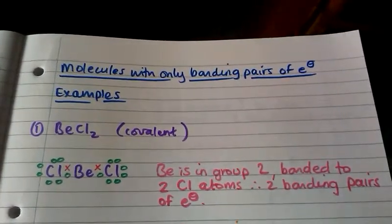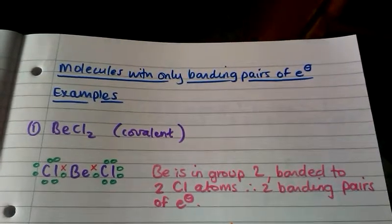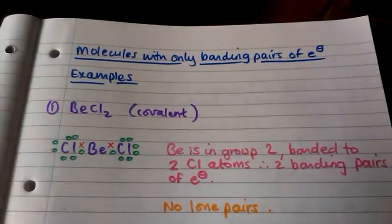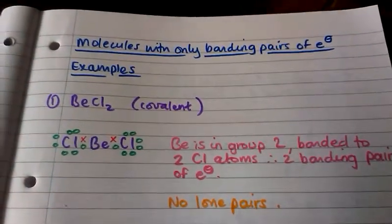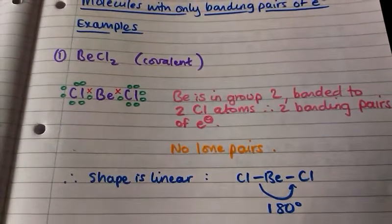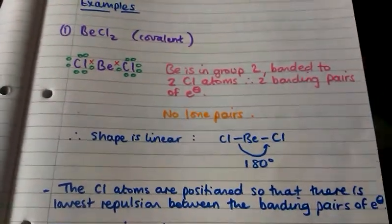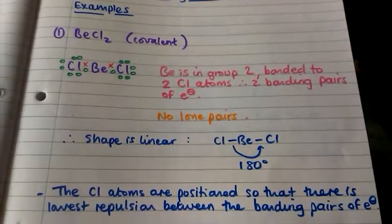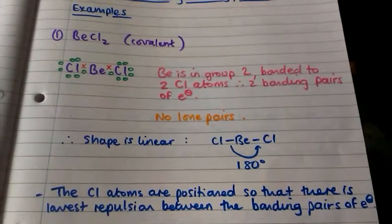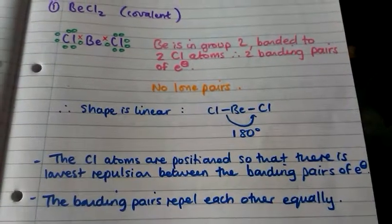If we look in the periodic table we see that beryllium is in group 2 and it's bonded to two chlorine atoms, so it has two bonding pairs of electrons and no lone pairs. This means the shape of this molecule is linear and the bond angle is 180 degrees, because the chlorine atoms are positioned to give the lowest repulsion between the bonding pairs, which repel each other equally.